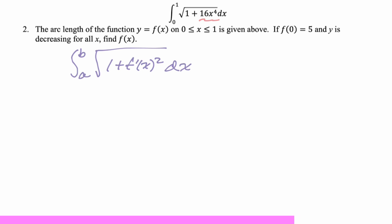So f prime squared is 16x to the fourth. Now we have to be kind of careful, because we're squaring f prime. So from that information, we know that f prime could either be positive four x squared, or could be negative four x squared. We have to decide which of those it's going to be.